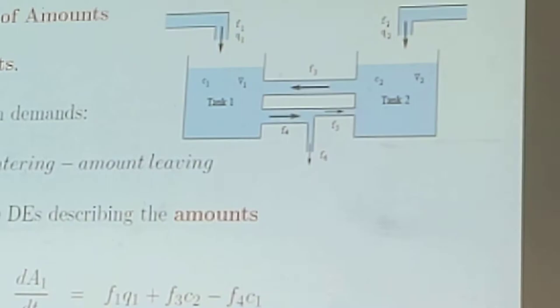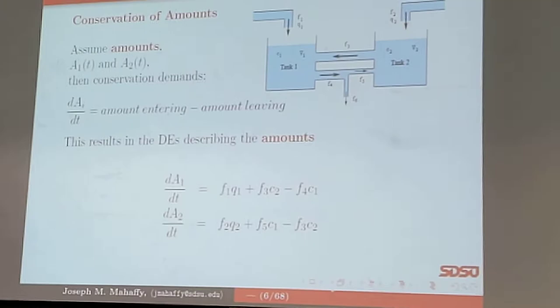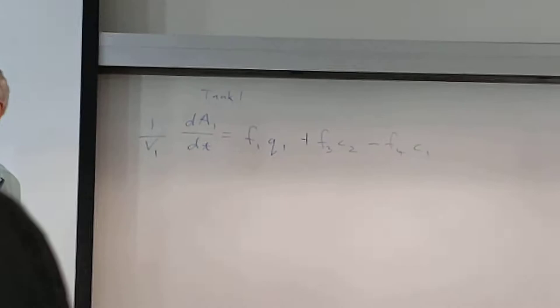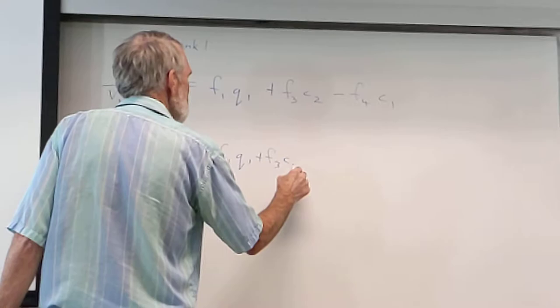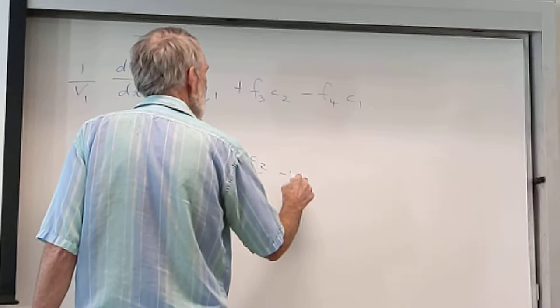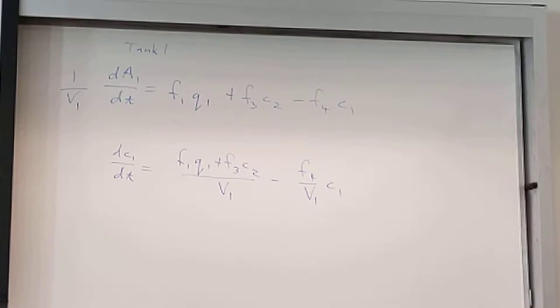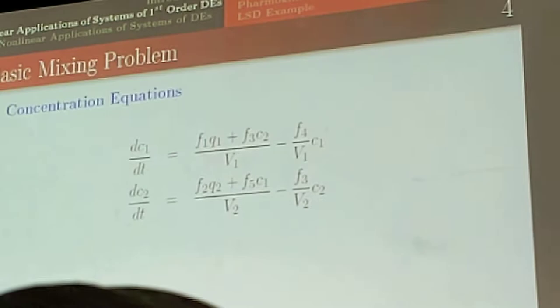Now, how did we change them into concentration equations before? Divide by the volume. If we want to make it into a concentration equation, I'm just going to take this whole thing and divide by V1. The other one I'm going to divide by V2. And so, then this one would become dC1/dT is going to be equal to F1,Q1 plus F3,C2, all divided by V1. And so, then we can make the concentration equations from the first one, from the second one.